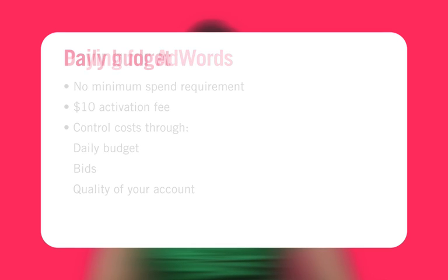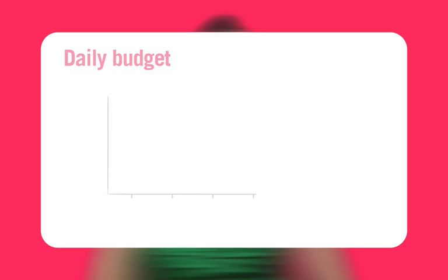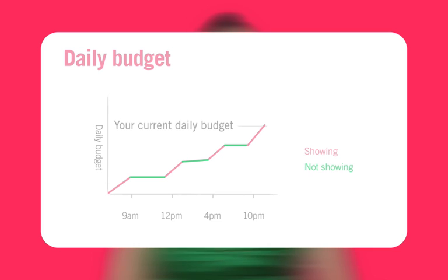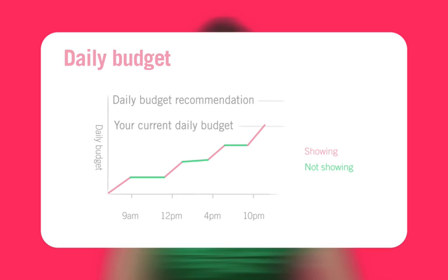Your daily budget is the spending limit you set on each campaign for each day. Google shows your ads until your daily budget is spent. To help you maximize your ads' visibility, AdWords provides daily budget recommendations within your account. These recommendations are based on historical click data for the same or similar keywords that you've chosen.